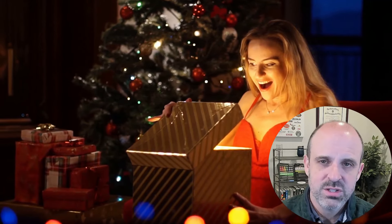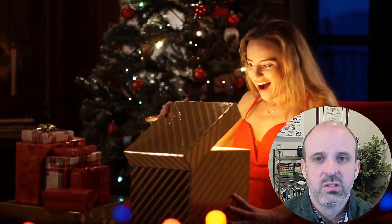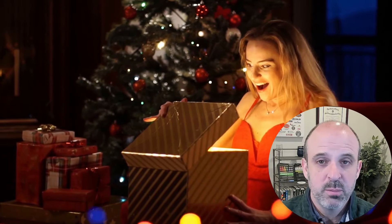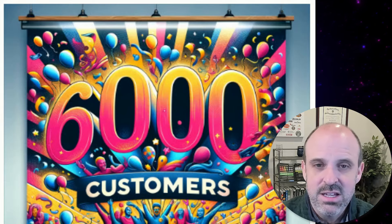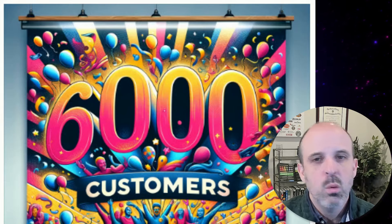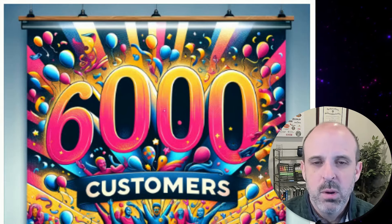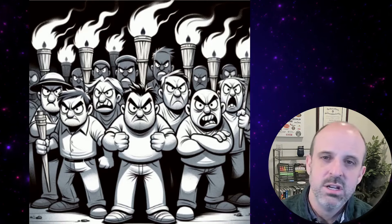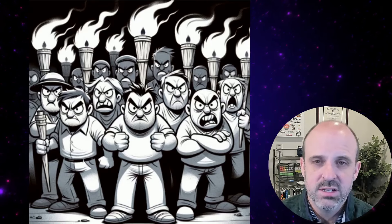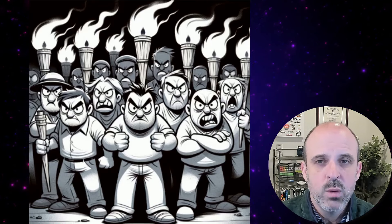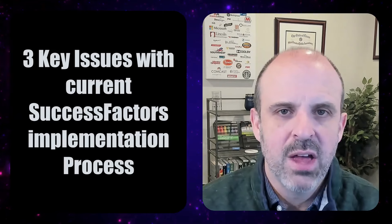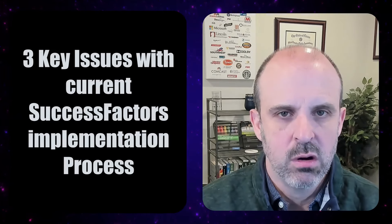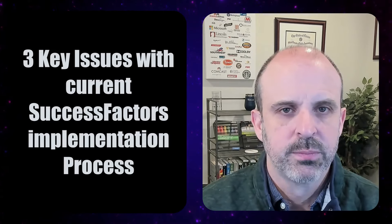So why does it matter that we're still using workbooks? The process must be working okay — we're up to 6,000 EC customers, so we're not experiencing riots during implementations. But I do think we could do better. Here are the three problems I see with the current process.